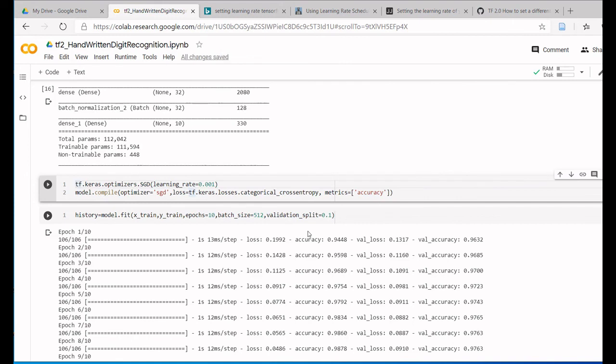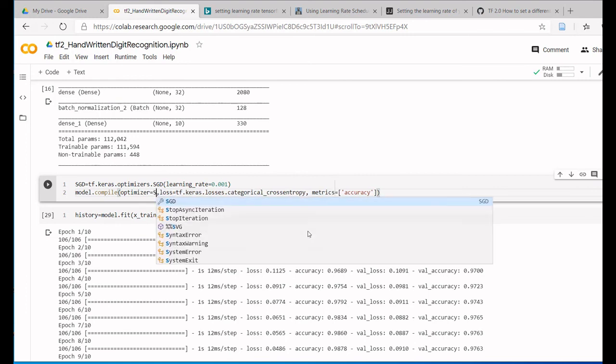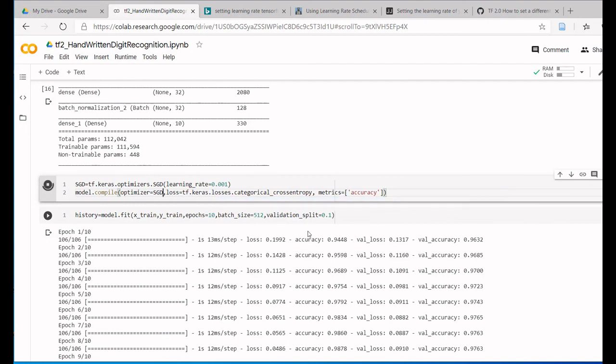This will form a configuration for stochastic gradient descent. Instead of using optimizer equals 'sgd' as a string, we have used the configured object. Now execute the cell.